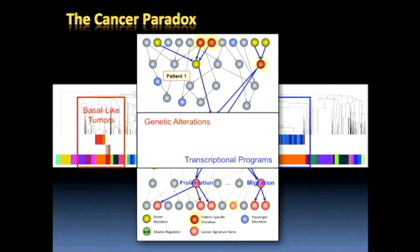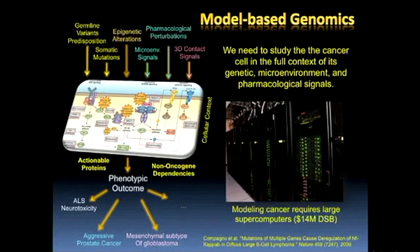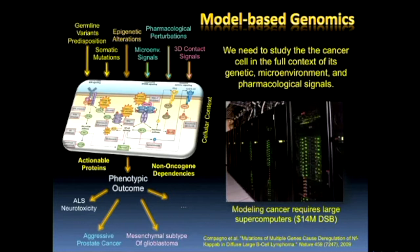Those programs include proliferation, abrogation of immunodetection, immortalization, etc. The aha moment came from a collaboration with Ricardo Dalla-Favera's lab, starting from a serendipitous observation by Lou Staudt at the NCI that the NF-κB complex was a dependency in the ABC activated B-cell subtype of diffuse large B-cell lymphoma, but not in the less aggressive GCB subtype. If you silence NF-κB in the ABC subtype, those cells die. If you silence NF-κB in the GCB subtype, those cells are perfectly fine.